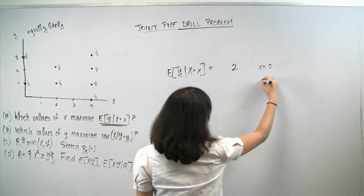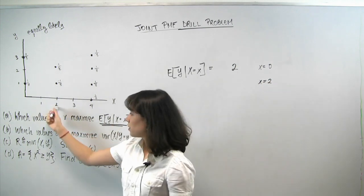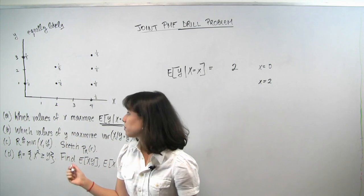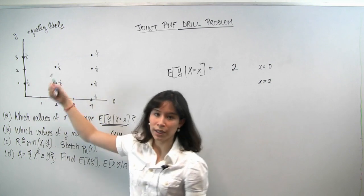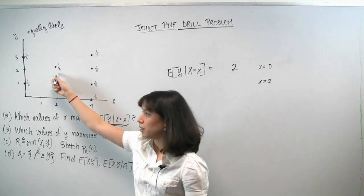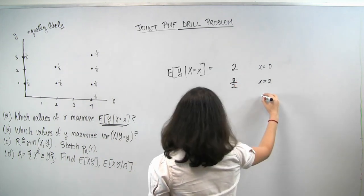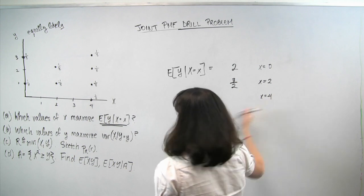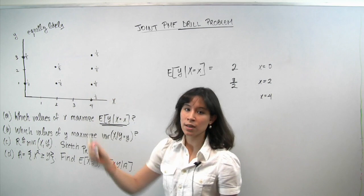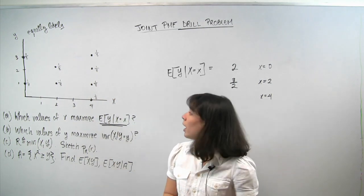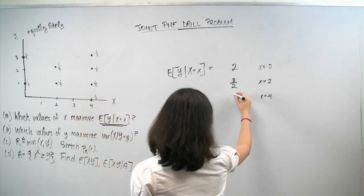Skipping to x equal to 2, since 1 and 3 are not possible values of x. When x equals 2, y can only take on values of 1 or 2; they're equally likely, so the center of mass is at 1.5, or 3/2. Similarly, when x equals 4, we're in a conditional universe where y can take on one of four points with probability 1/4 each, and the center of mass is again at 1.5, or 3/2. This quantity is undefined otherwise.